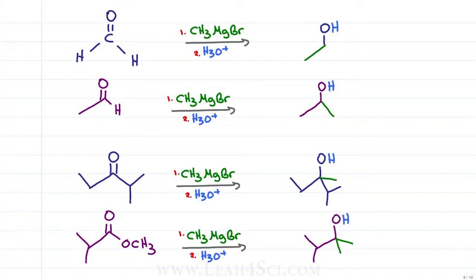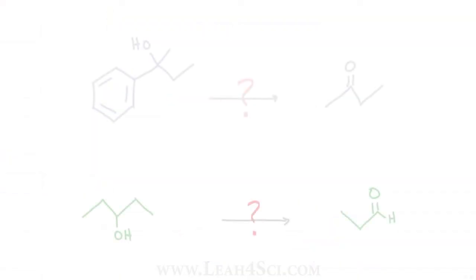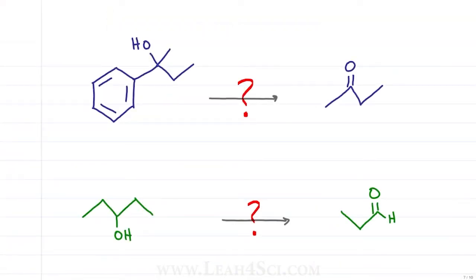Once you recognize this, you can very easily understand the shortcut as follows. Going back to the initial problem, here's the pattern you want to look for. Identify the carbon that holds the alcohol and look for the carbon chain that we started with and recognize that it used to be a carbonyl.